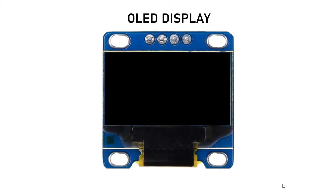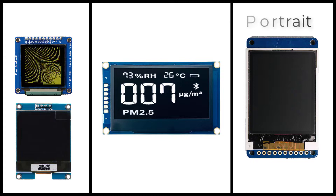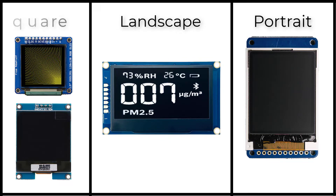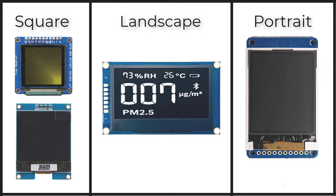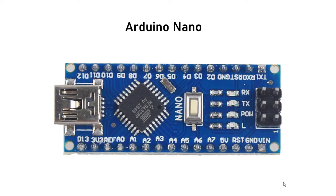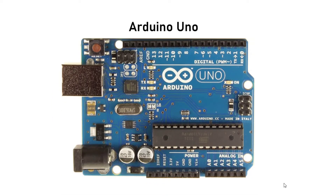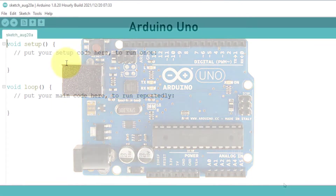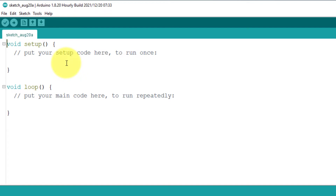For this project, you will need an OLED display of 128 by 64 pixels. You might use any other LCD you have, because we will write code that will work on different sizes of LCD displays. I have used Arduino Nano for this project, but you can also use Arduino Uno. We will use Arduino IDE for writing the code.